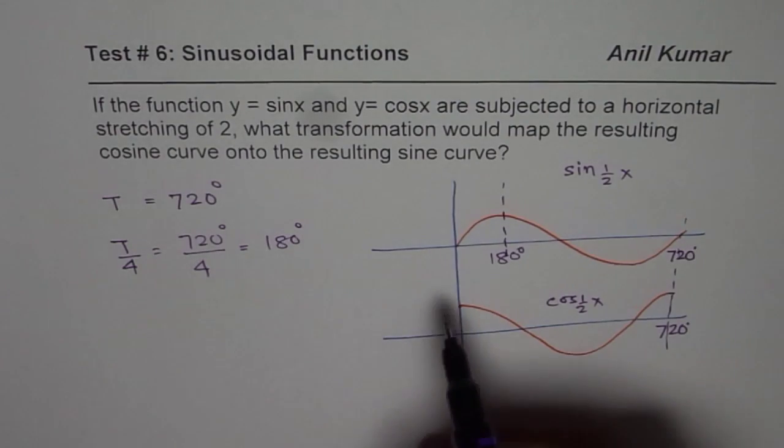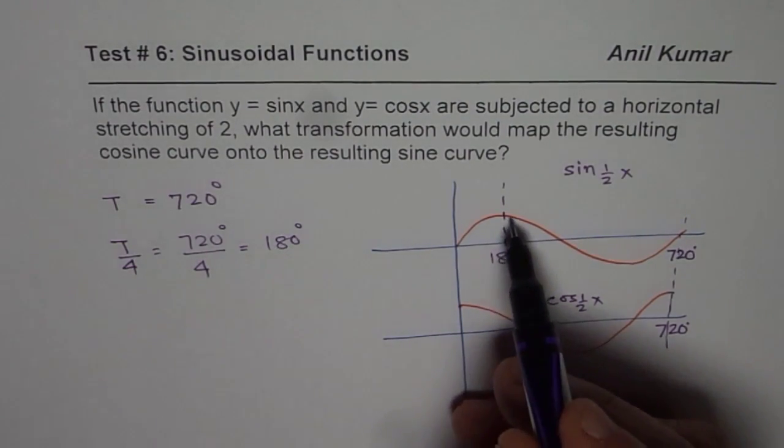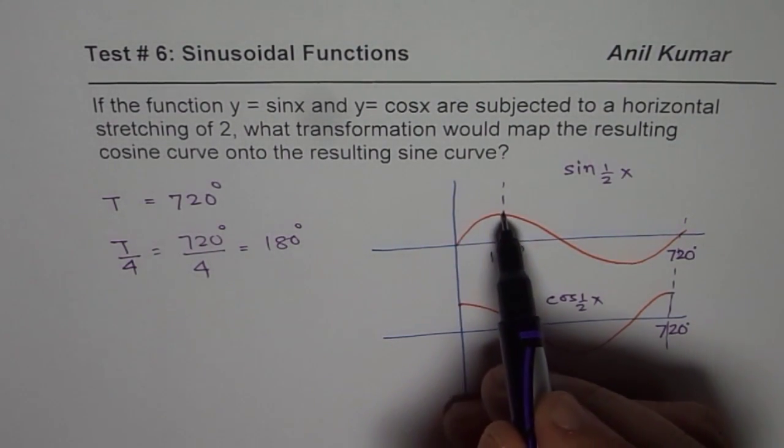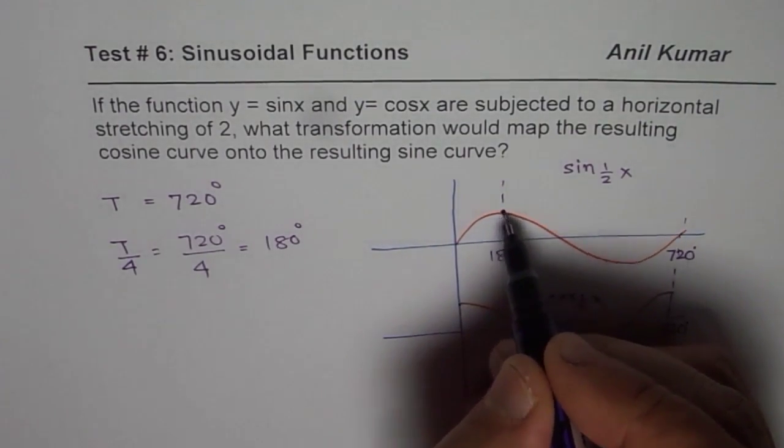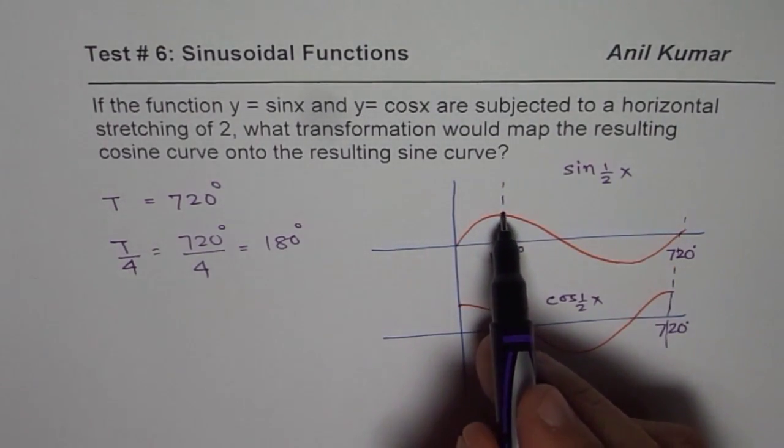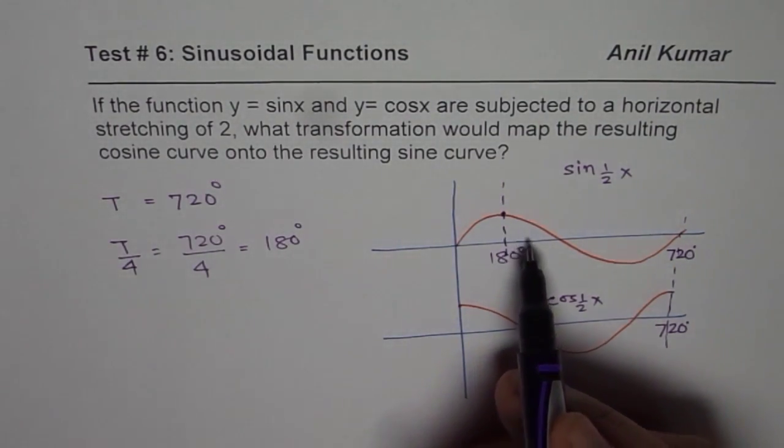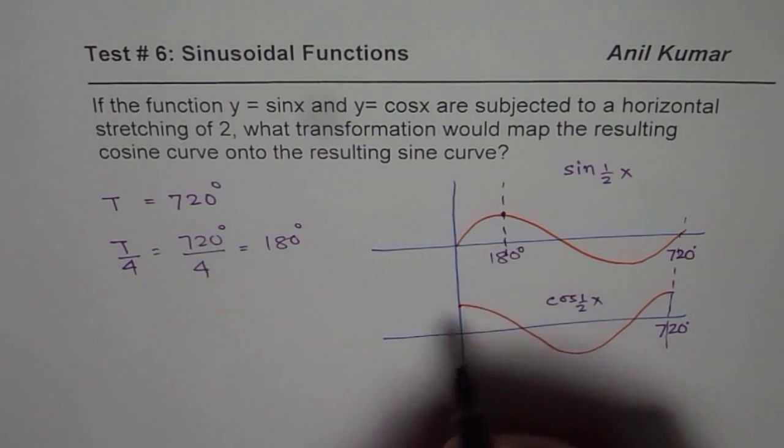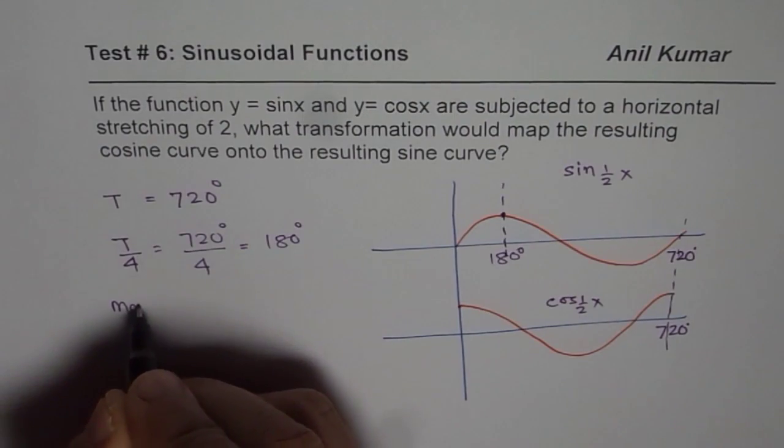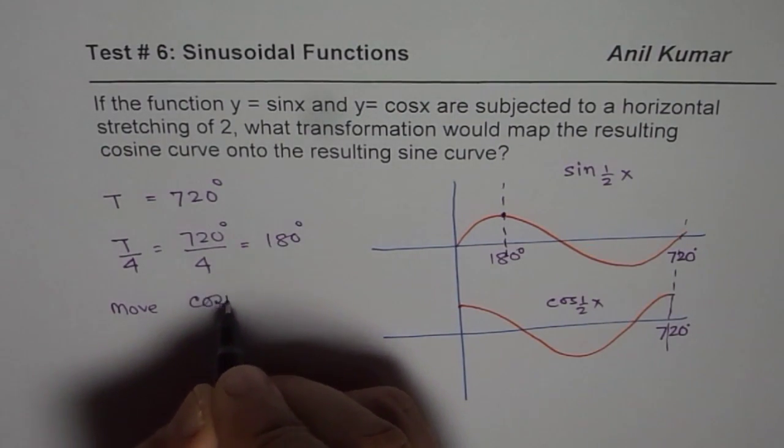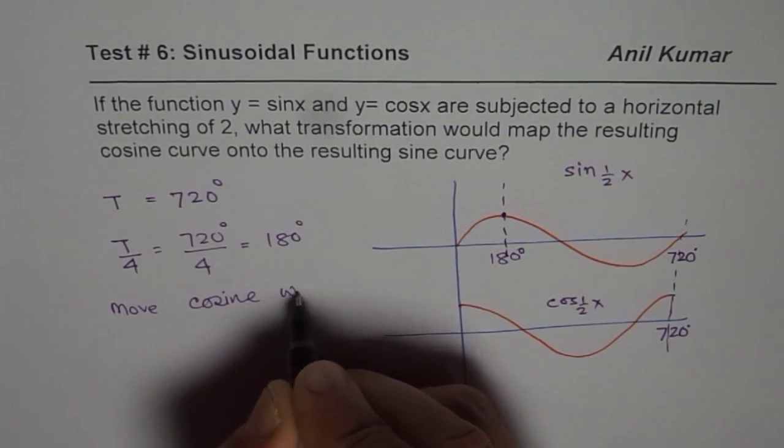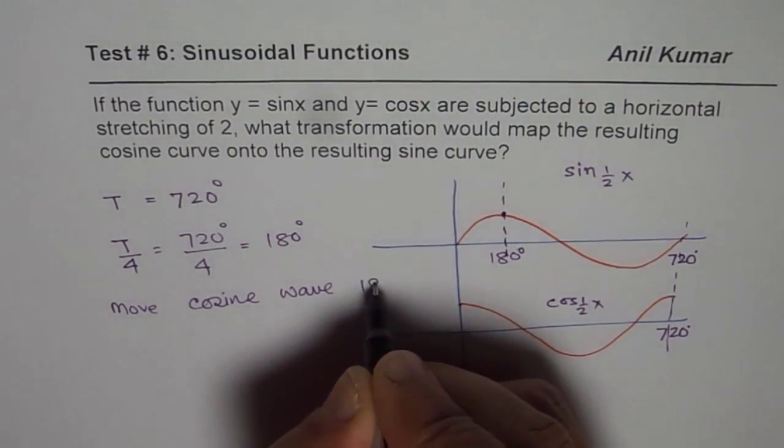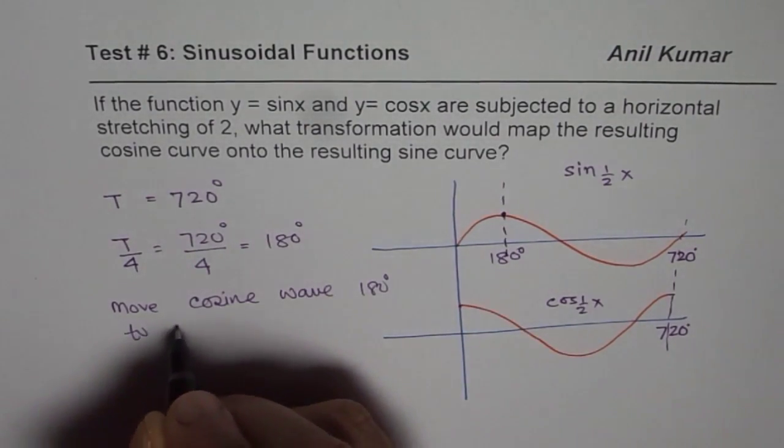Do you understand? So if you are mapping from cos to sine, you are looking at the sine. So actually in the sine wave, maximum comes 180 degrees after. Do you see that? And therefore,